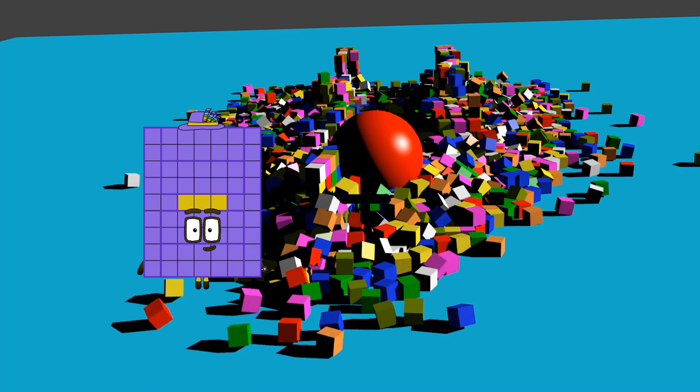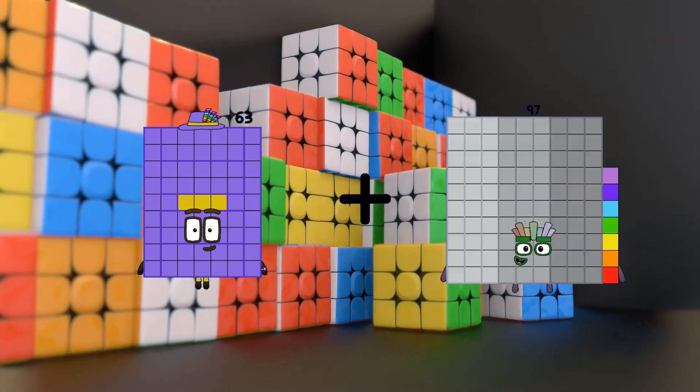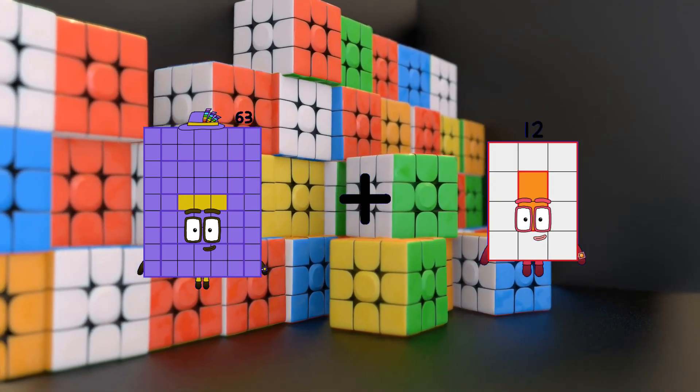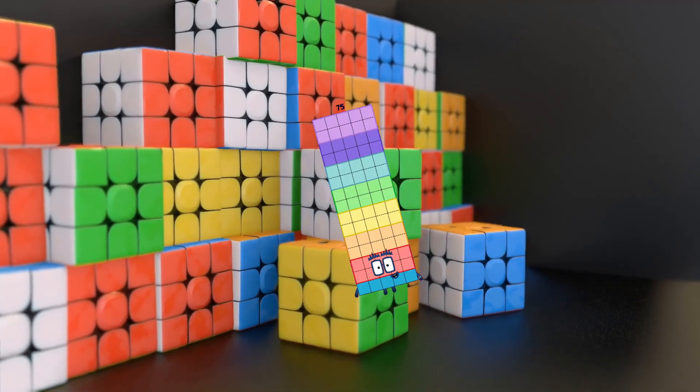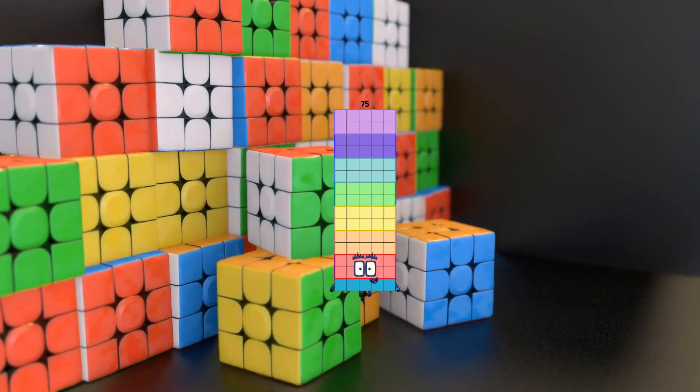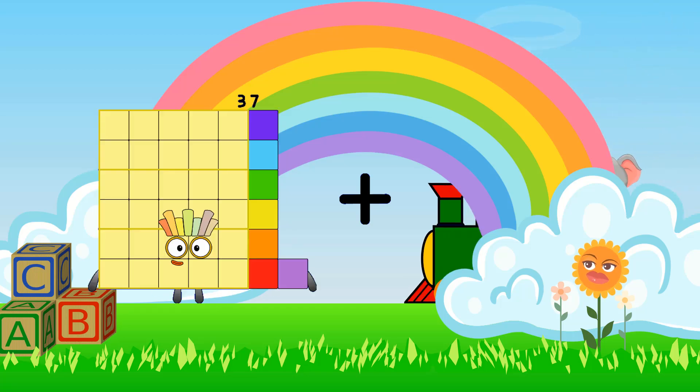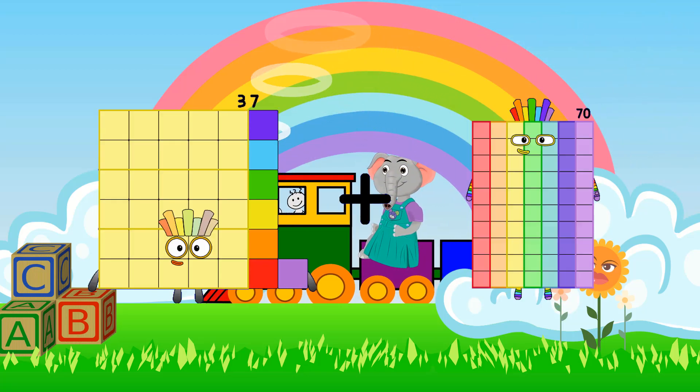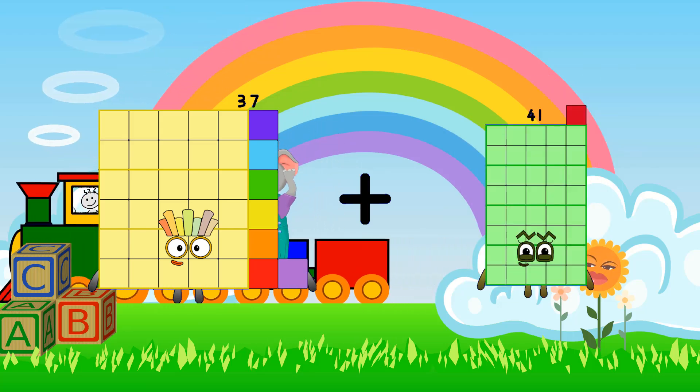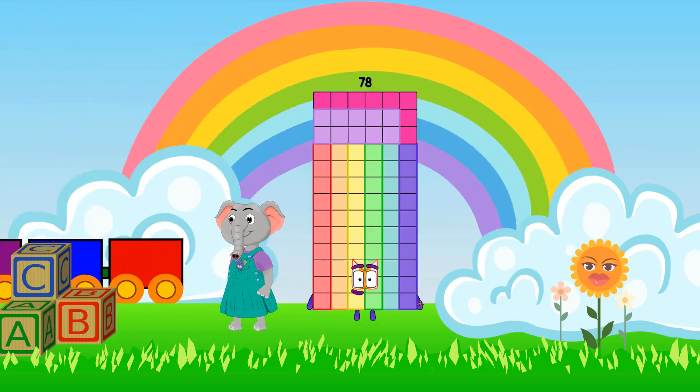63 minus 12 equals 75. 37 plus 41 equals 78.